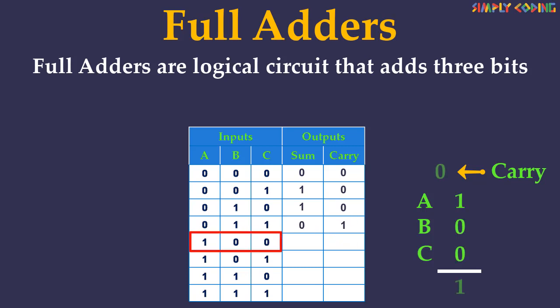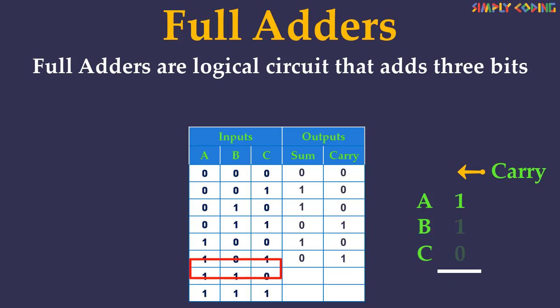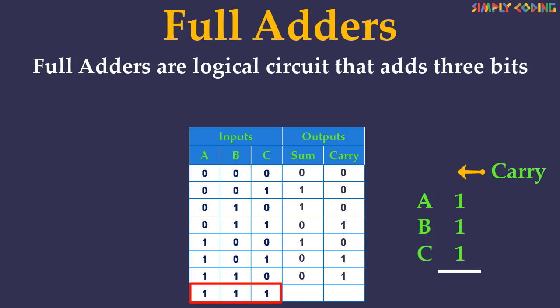When we add 1, 0 and 0, the sum is 1 and carry is 0. Next when we add 0 with two ones, the sum is again binary number 10, where 0 is the sum and 1 is carry. The next case is also the same with 0 and two ones, so the addition gives 0 as sum and 1 as carry. Now the last one has three ones. This gives us a total of 3, which in binary is 11. So sum is 1 and carry is also 1. So this is the truth table for full adder.